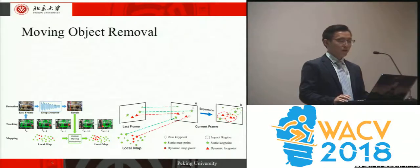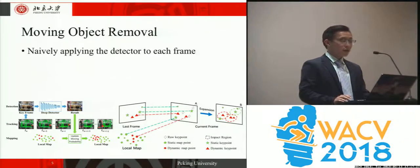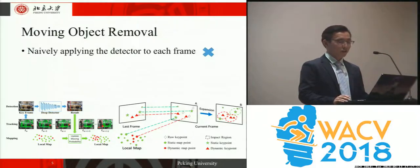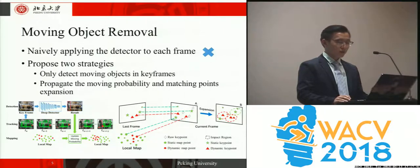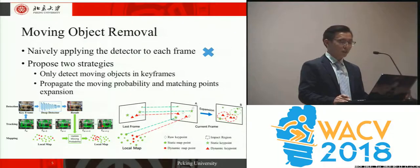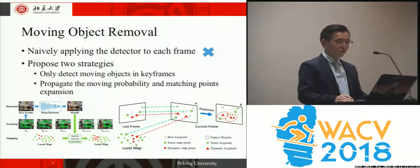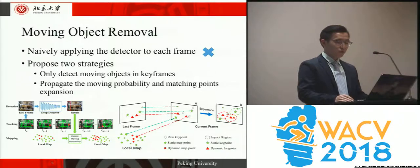Now I will introduce the moving object removal module. Naively applying the detector to each frame is not viable because the detection time per frame is too long. We propose two strategies to overcome this. The first is to detect moving objects only in keyframes and update the moving probability of points in the local map to accelerate the tracking thread. The second is to propagate the moving probability by feature matching and matching point expansion in the tracking thread, to calculate a general shape of moving objects and remove features in that shape before camera pose estimation.